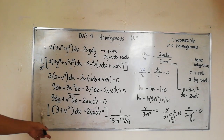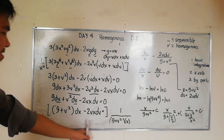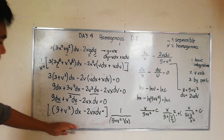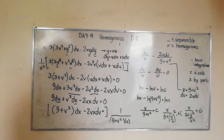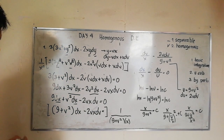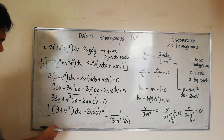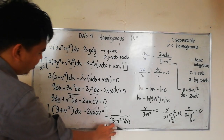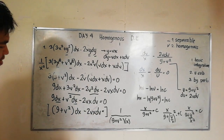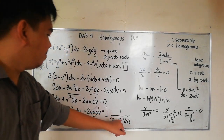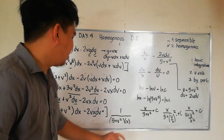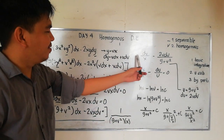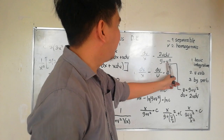We now have a variable separable equation. Separating variables by multiplying through by 1/[(9 + v²)x], we get: dx/x minus 2v dv/(9 + v²) equals 0. We can now integrate.